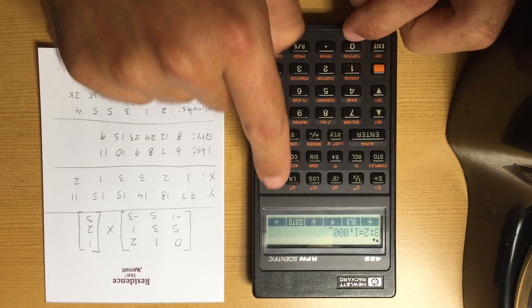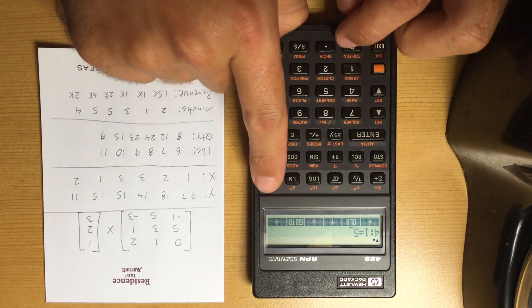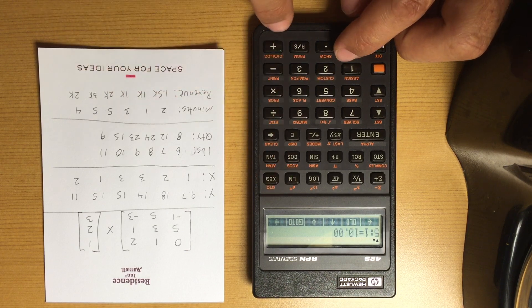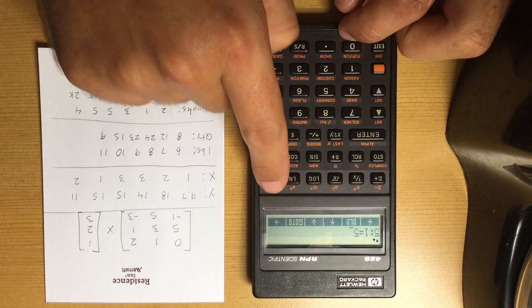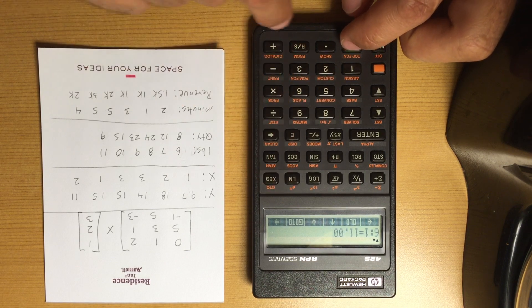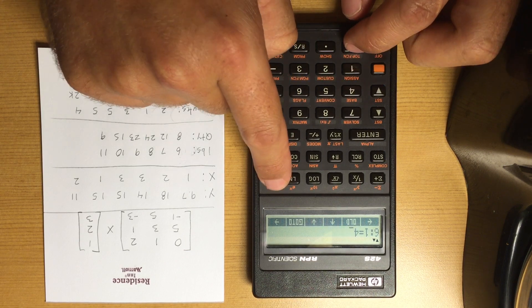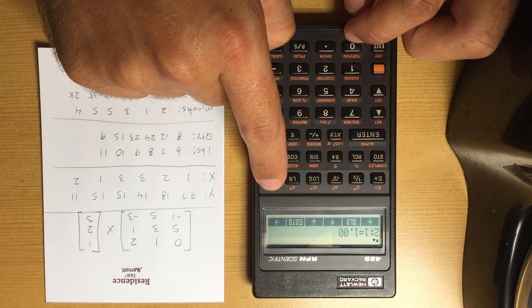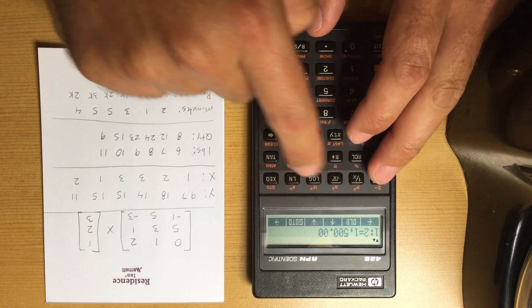I've got 2 and 1.5e3, 1 and 1000, 3 and 1000, 5 and 2000, 5 and 3000, and 4 and 2000.